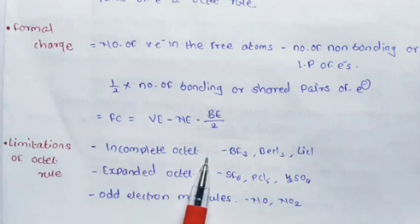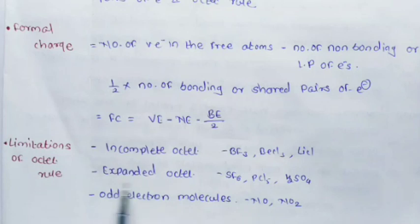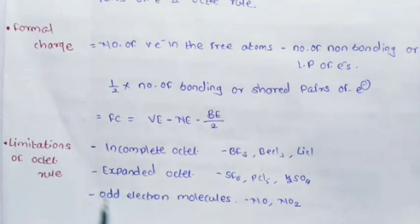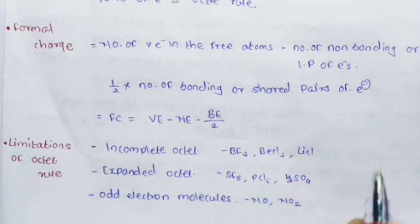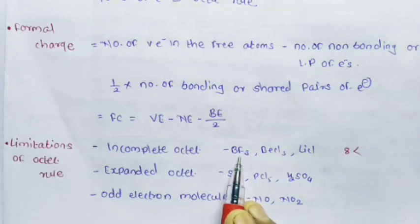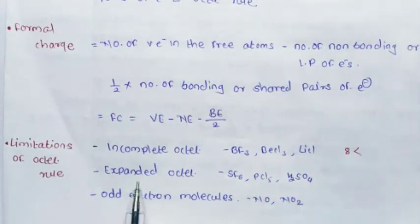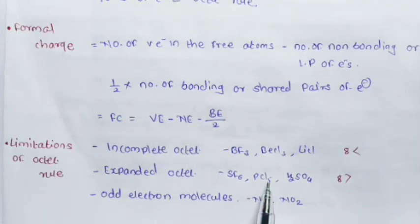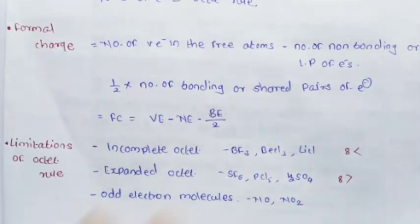The octet rule has three limitations. First: incomplete octet, where the number of electrons in the valence shell is less than 8 — examples are BF3, BCl3, and LiCl. Second: expanded octet, where the number of valence electrons is greater than 8 — examples are SF6, PCl5, and H2SO4. Third: odd electron molecules such as NO and NO2.